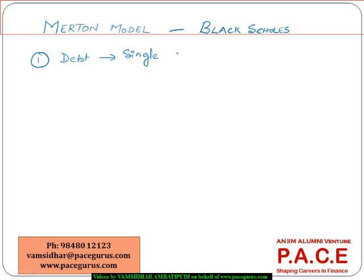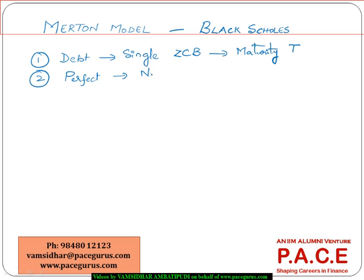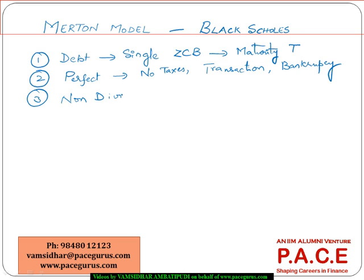The debt is a single zero coupon bond with a maturity equal to the average maturity period of the entire set of securities. We also assume that the financial markets are perfect — no taxes, no transaction costs, and no bankruptcy costs — and that we are dealing with a non-dividend paying firm.